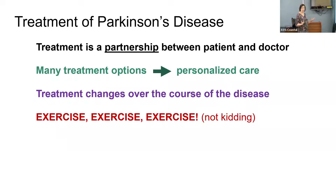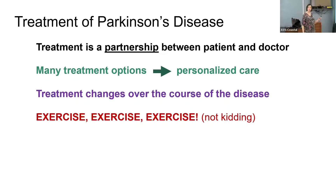Everything is personalized — that's why there are movement disorder specialists. Do the best that you can to get aerobic exercise. Even if you're not able to exercise a lot, take a walk — this is a really nice part of the country. People can get in the pool for six months, walk in the pool a little bit. All of these things are really helpful, so do as much exercise as you can.